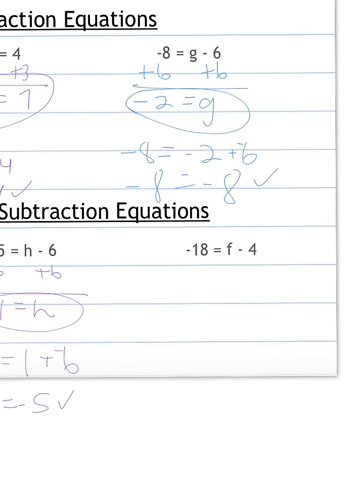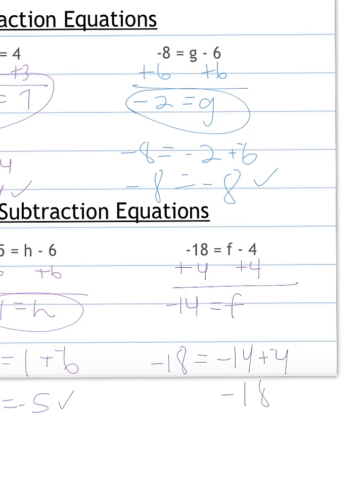One more for you to try: negative 18 equals F minus 4. We do the opposite of subtraction, which is addition. Negative 18 plus 4: think of it as the temperature being negative 18 degrees and it rises 4 degrees — it is now negative 14 degrees. Plug this back in to check. That works, so our answer of negative 14 is correct.